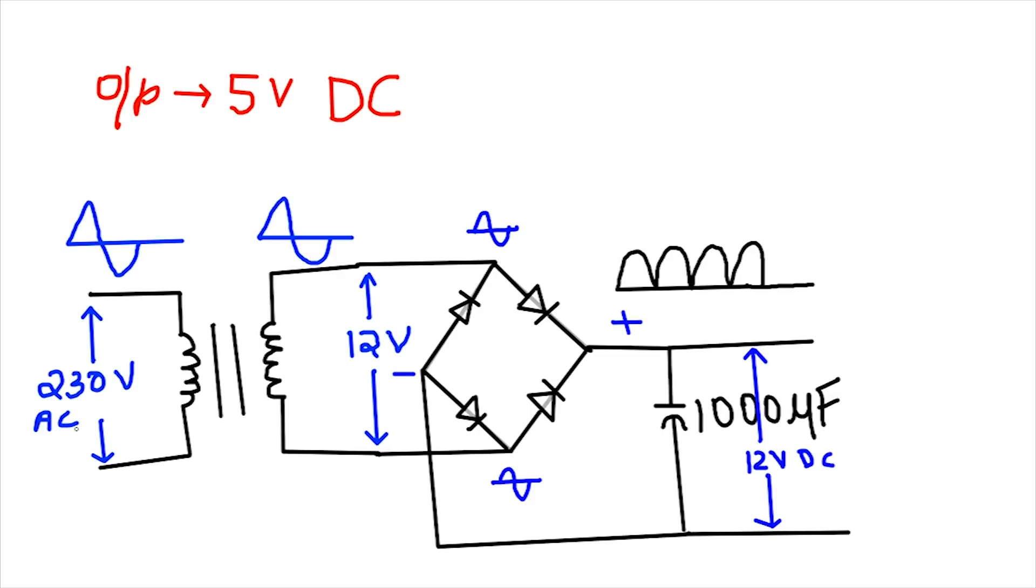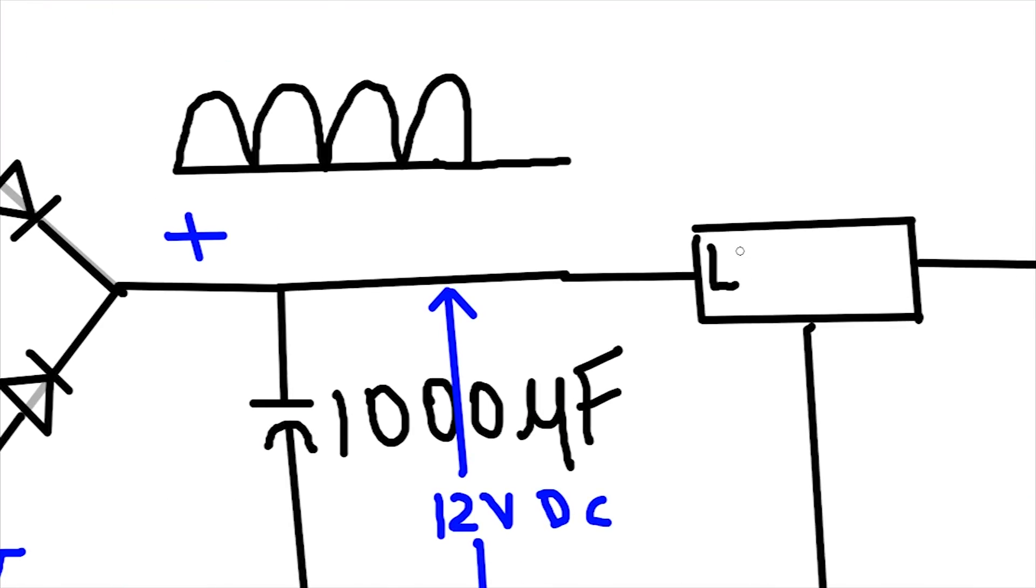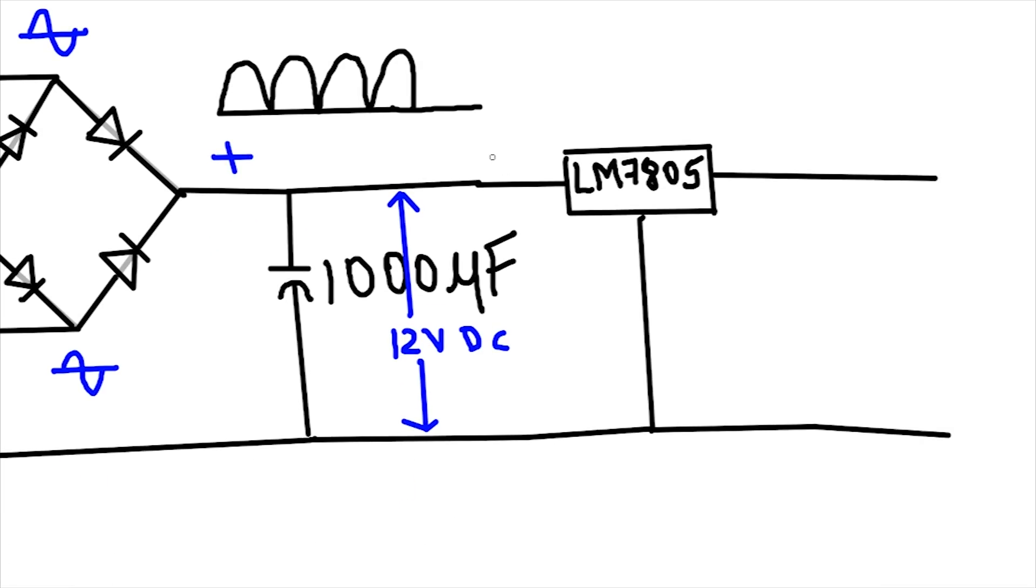We are not done yet. Our aim was to get 5V output. For this we need a voltage regulator placed at this 12V output. Let's use a LM7805 voltage regulator. LM7805 is basically a 3 terminal device. This here is the input, output and common ground. These two digits here imply the output voltage. So we have a voltage of plus 5V as output.